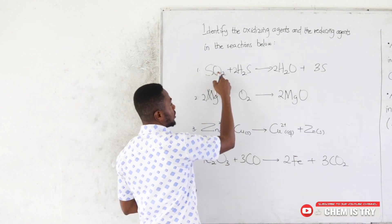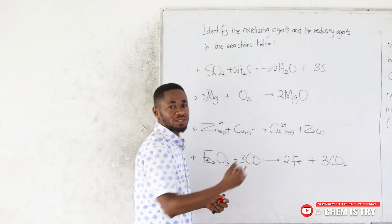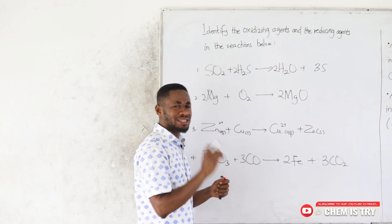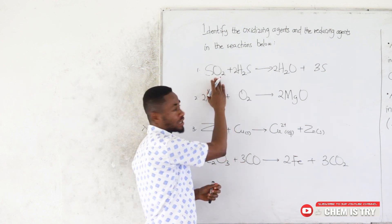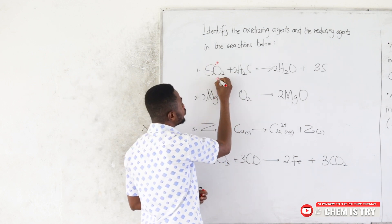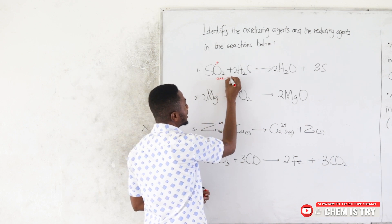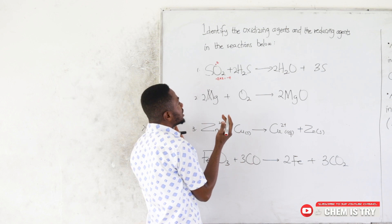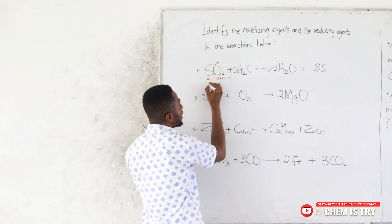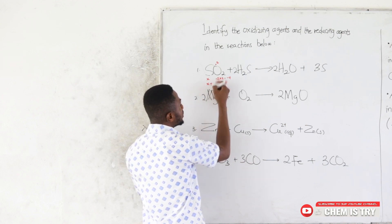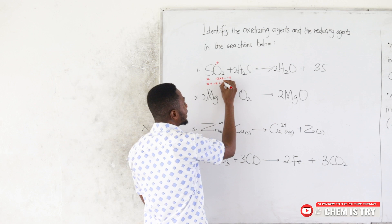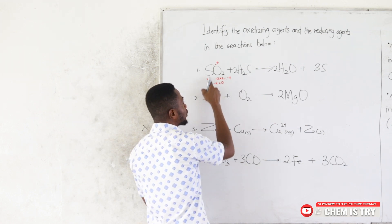In SO₂, oxygen is normally in a −2 oxidation state — this is not a peroxide — so oxygen has a charge of −2. With two oxygen atoms, that gives −4. Letting sulfur's oxidation number be x, we get x + (−4) = 0 for this neutral compound, so the oxidation number of sulfur in SO₂ is +4.